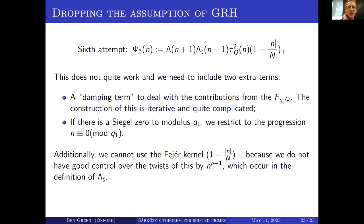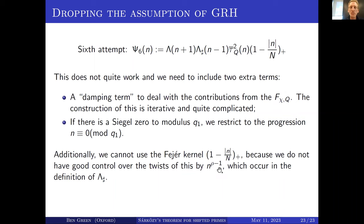It also turns out — and this is really annoying — the Fejér kernel isn't quite right either. The reason is that you need to control not just the exponential sum, but the exponential sum twisted by these n^{ρ−1} terms. It's quite possible for some of those to be large when the exponential sum of the Fejér kernel itself is not so large, which is a real issue.